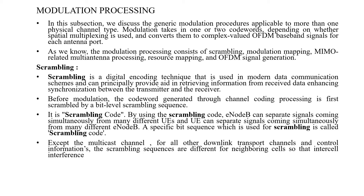In the last session we discussed Downlink Transport Channel Processing, which mainly includes two processes: the channel coding process and the modulation process. Today we will continue with the modulation processing. In this subsection we discuss the generic modulation procedures applicable to more than one physical channel type. The modulation takes in one or two codewords, depending upon whether spatial multiplexing is used, and converts them into complex-valued OFDM baseband signals for each antenna port.